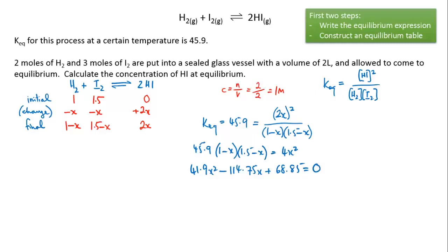this, and this looks like a standard quadratic which you can solve of course using the standard formula that you all know and love: x equals minus b plus or minus the square root of b squared minus 4ac all over 2a. In this case your a is 41.9, your b is minus 114.75 and your c is 68.85.